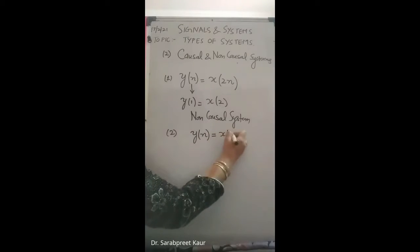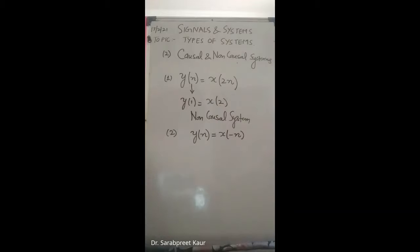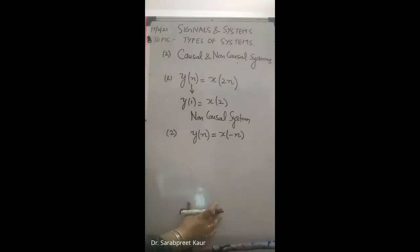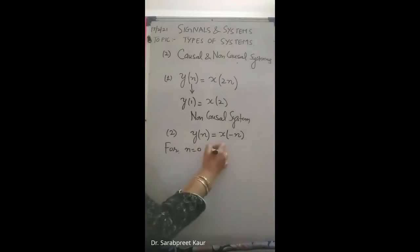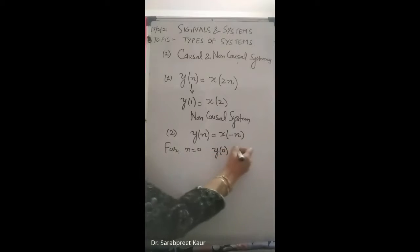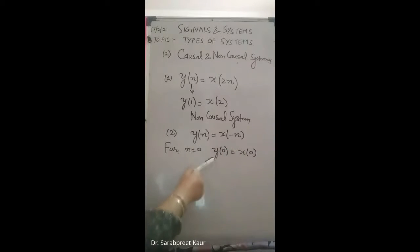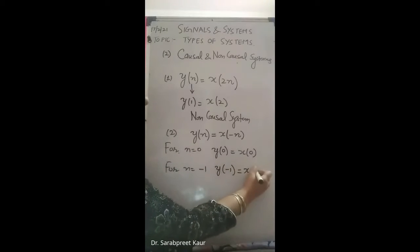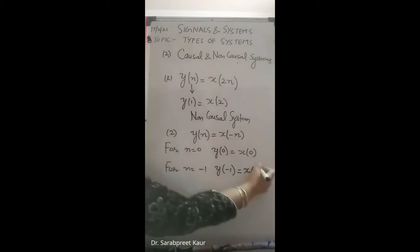For questions like y(n) = x(-n), where there is a change in sign of n, you have to check for all values of n. For n = 0: y(0) = x(-0) = x(0), so the output depends only on the present input — that is okay. For n = -1: y(-1) = x(1), which means the output at n = -1 depends on the input at n = 1 — that is a future input.